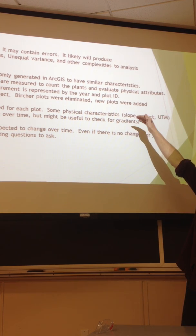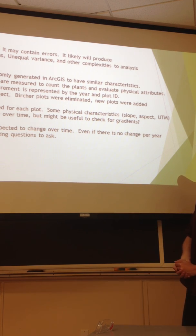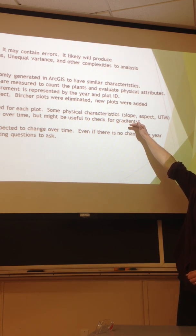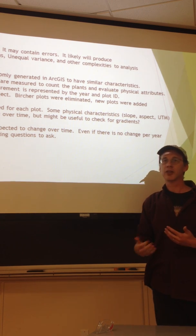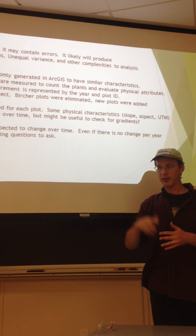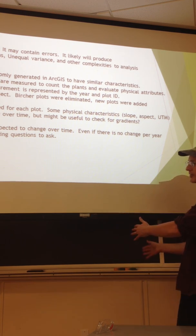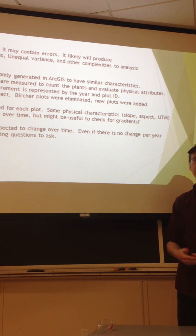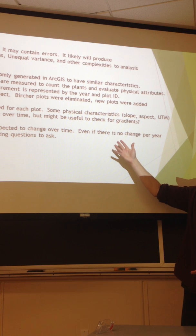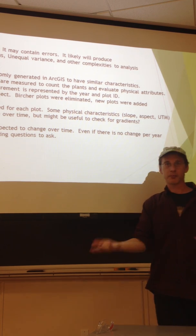Then each year we would go out at the same time and measure these plots. So we would capture some of the physical characteristics that aren't likely to change. Like the location of the plot will never change. The slope, how steep of a slope does it have? Which way is it pointed north or is it pointed south? That's the aspect. And that's in degrees of north or south. So those shouldn't change year to year. But other data is expected to change, like what species are growing there.